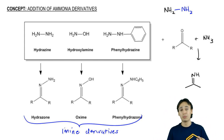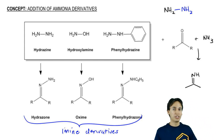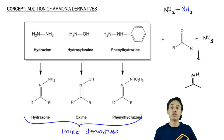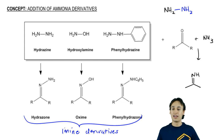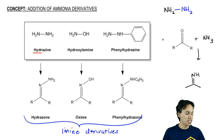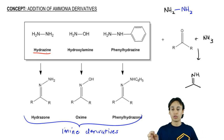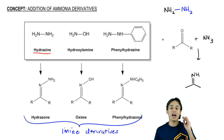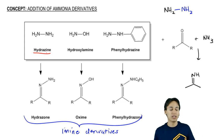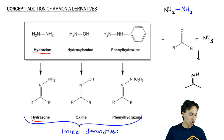I would commit these to memory because they're functional groups you should know, and you never know if your professor mixes it up and instead of giving you a normal amine, gives you hydrazine. Hydrazine is the name of NH2 with another NH2. When hydrazine reacts with a carbonyl in an acidic environment, it makes hydrazone.